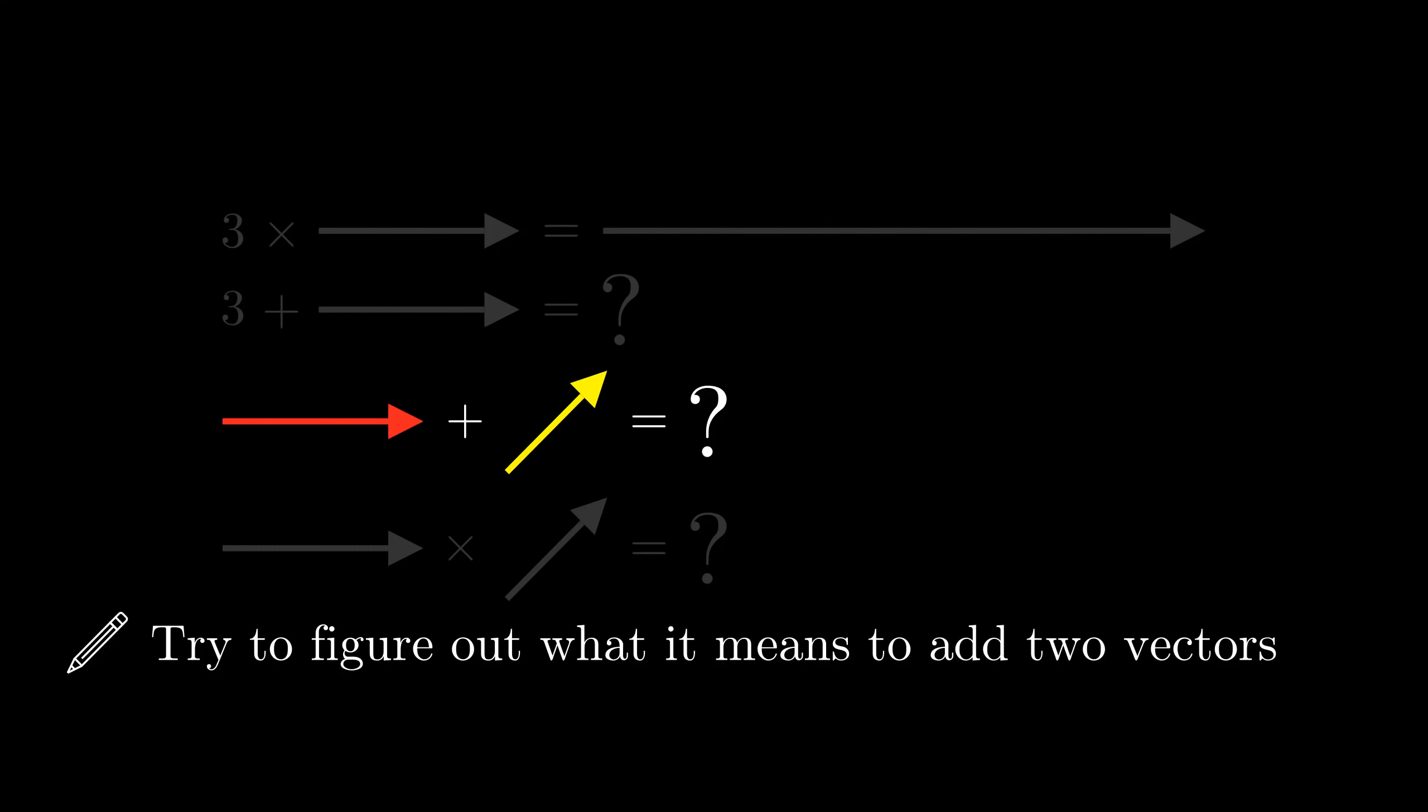Great, so we now know how to multiply vectors by scalars. But wait, what about adding them? And what about adding and multiplying vectors by each other? We'll get to all of these eventually. In fact, in the next video, we are going to figure out what it means to add two vectors. Before you watch it, see if you can figure out what vector addition should be yourself.